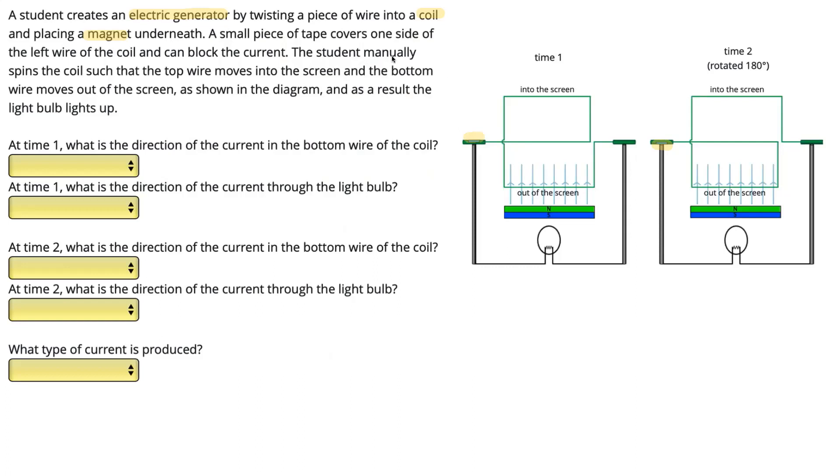In this problem, the student manually spins the coil, such that the top of the wire moves into the screen, and the bottom of the wire moves out of the screen, as shown in the diagram. And as a result, there's an induced EMF, and so there's an induced current, and our light bulb lights up.